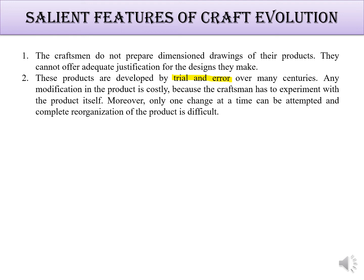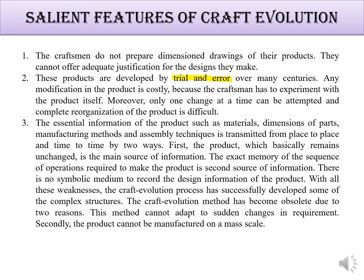When there is no formal design, we cannot change the design easily. Only skilled workers can think about it and make changes; otherwise, we have to prepare a new one. We also don't have essential information such as which material was used, what dimensions were prepared, what manufacturing process was done, or the sequence of assembling the product.